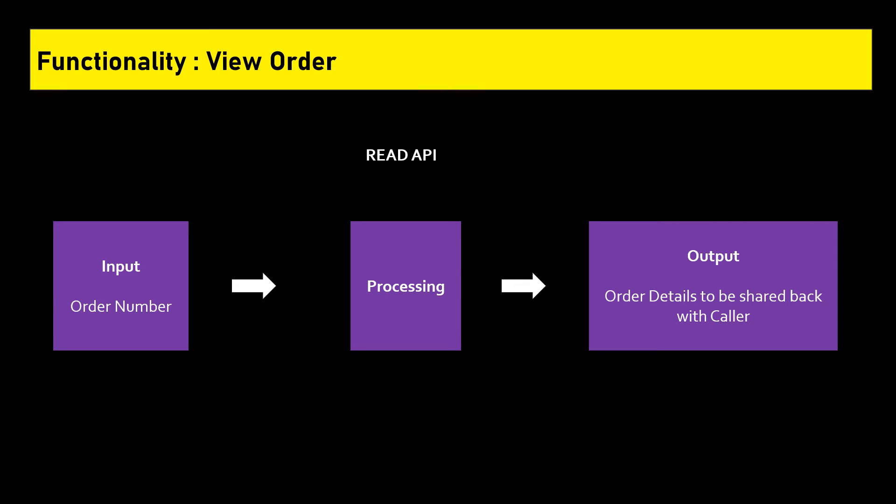For the output part, this API returns the order details back to the calling application. If the order details are not found for the provided order number, an error message is sent back indicating the error. This is a simple non-technical view of a Read API. If any application passes the required input, this API fetches the order details from the database and returns them to the calling application. On the backend, it would use the GET HTTPS method. You can search further for the GET method for more details.